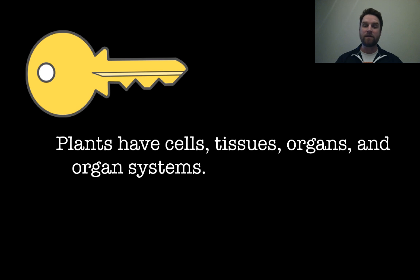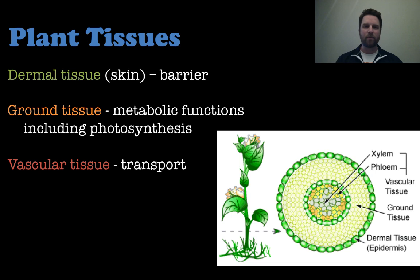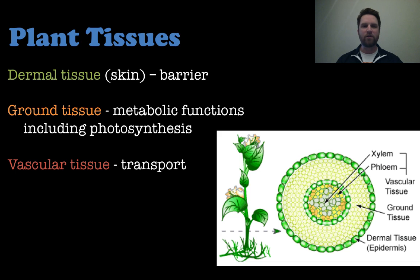Plants have cells, tissues, organs, and organ systems, just like animals. So let's take a look at some plant tissues — remember, a bunch of cells specialized together serving a common function. We have dermal tissue, which is the plant's skin, ground tissue, which does all of the metabolic functions including photosynthesis, and then vascular tissue, which is kind of like veins and arteries in animals, but these are slightly different and have different names, which we'll get into in just a second.